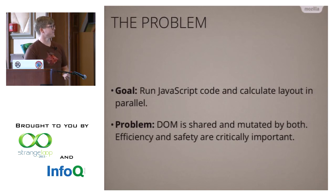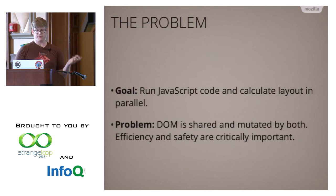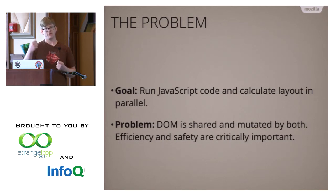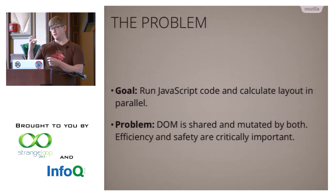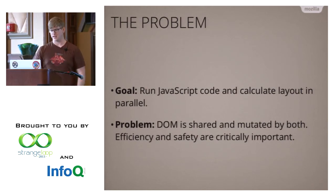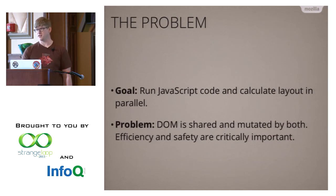An example: if script is making changes to element style — say you set the background color to red and then the text color to black — if you don't handle this case properly, you might render the intermediate state, where you would see a node change to red first and then change the text color. We don't want that. Also, if script was going through and deleting nodes, layout might be running calculations that needed that information, and then of course you might crash.